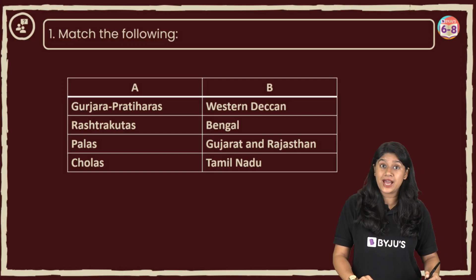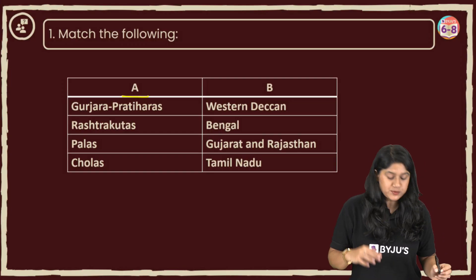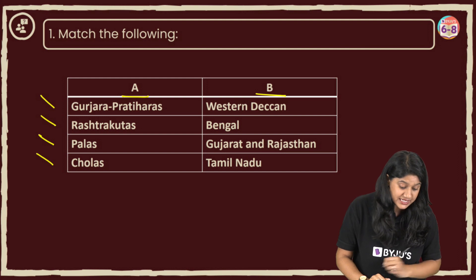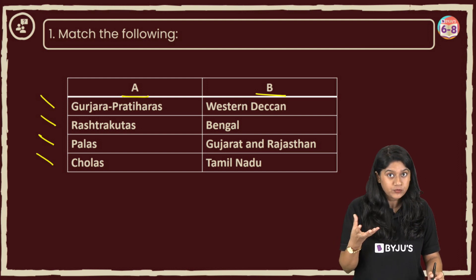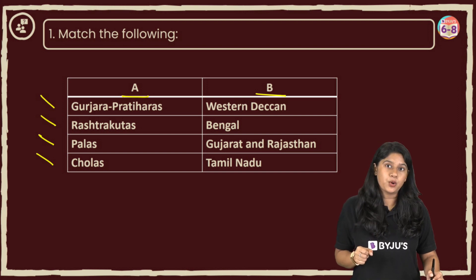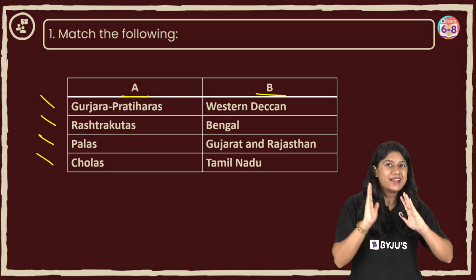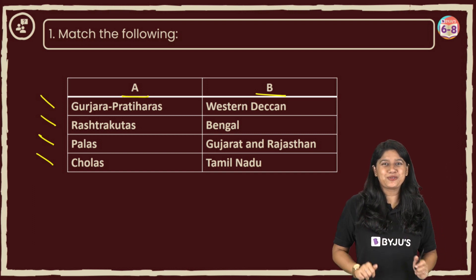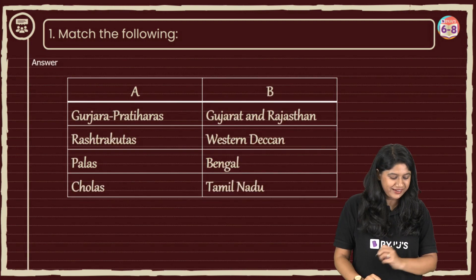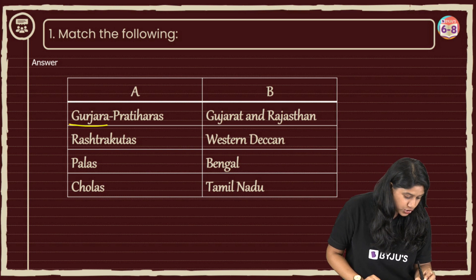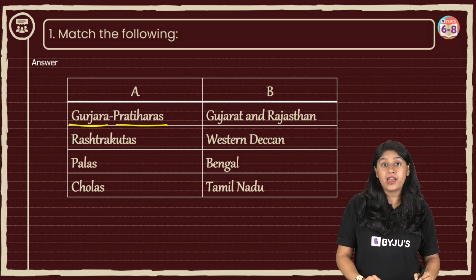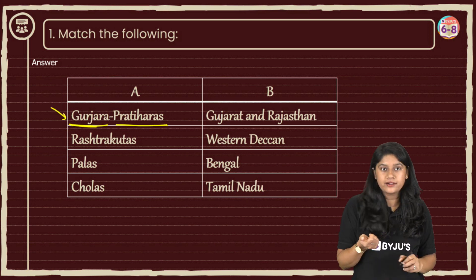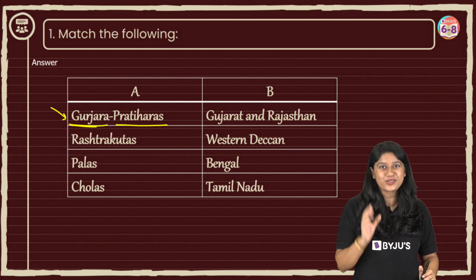Here we have the first question: match the following. We have two columns — Column A and Column B. In Column A, we have the name of the dynasties and Column B has the region they were ruling. I'll give you three seconds to look at the screen and try to match it up. Now let's quickly check the answers. Gujarat — Pratiharas — they were there in Gujarat and Rajasthan. The words in the question give us a hint about the Gujarat connection.